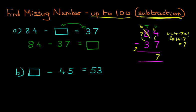And now we're on the tens. We've got 7 minus 3, it's a nice easy one. 7 minus 3, the answer is 4. And that is our answer, 47. We can write this in the original question. 84 minus 47 equals 37. The missing number was 47.